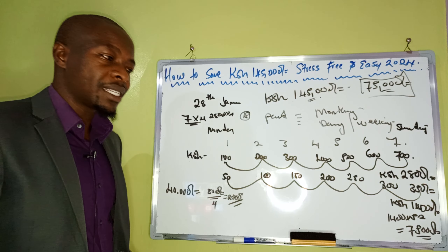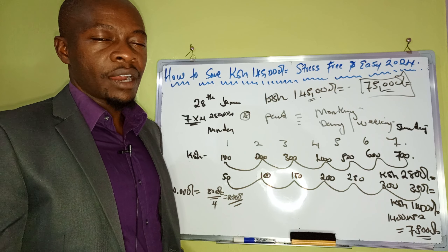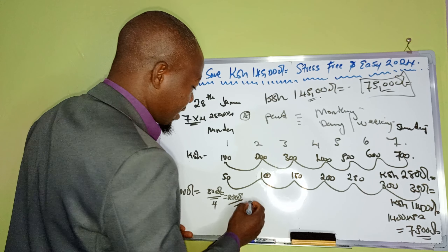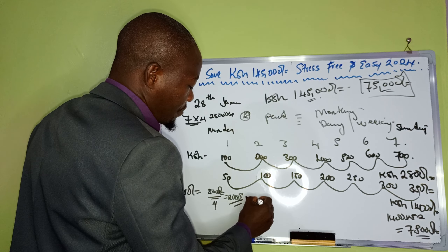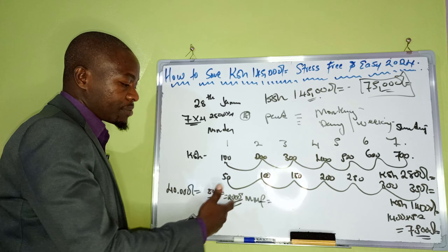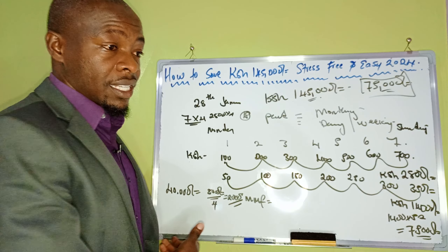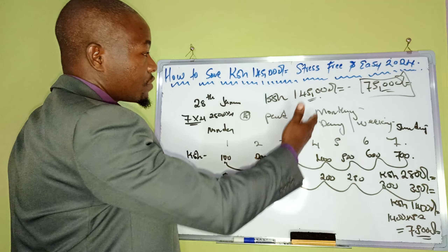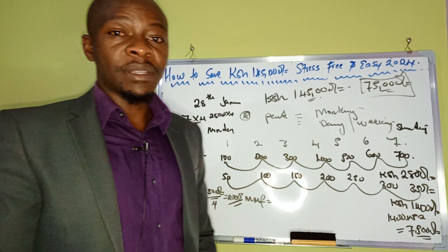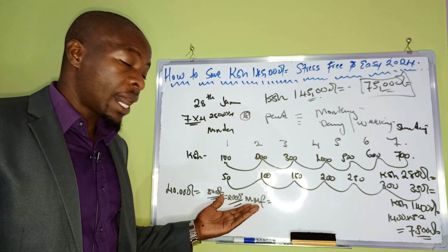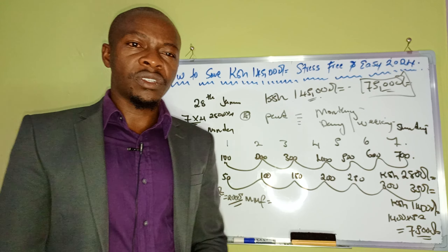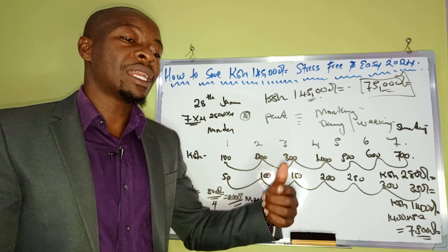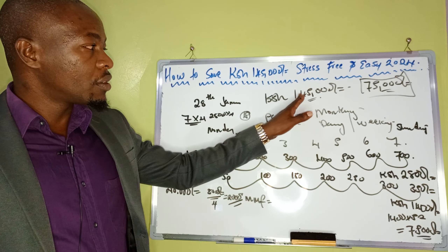Once you have your savable amount, don't just let it sit idle in a bank. I suggest channeling it into an MMF — a Money Market Fund, which is a unit trust. I believe every country has MMFs. By doing this, you're not only accumulating the 145,000 but also earning daily interest on your savings, which compounds over time.